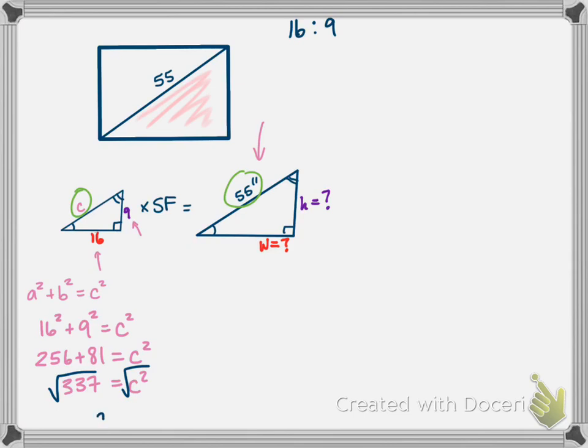So this is going to be 16² + 9² = c². 16² is 256, 9² is 81, so I have 256 + 81 = c². So that gives me 337 = c². But I want c, I don't want c². So to get c I just square root both sides, and my c value then is 18 point something - we'll call it 18.36.